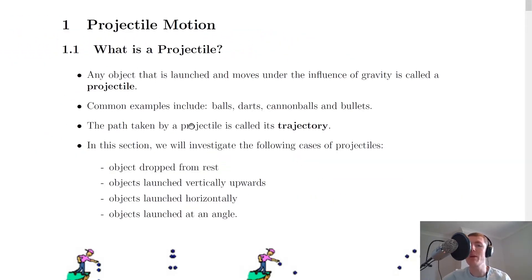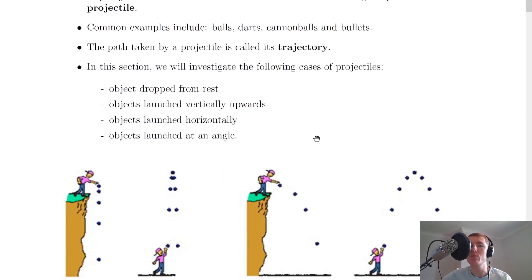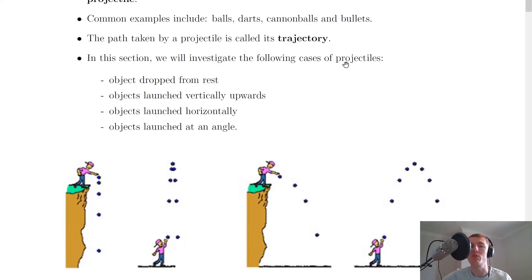Going back to the notes now, we say that the path taken by a projectile is called its trajectory. And in this section we will investigate the following cases of projectiles.